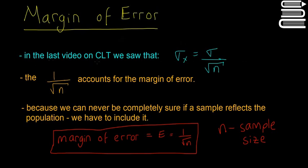So in the last video on CLT, which is the central limit theorem, we saw that sigma x, which is the sample standard deviation, or sample SD, is equal to the population standard deviation, or pop SD, divided by the square root of n.